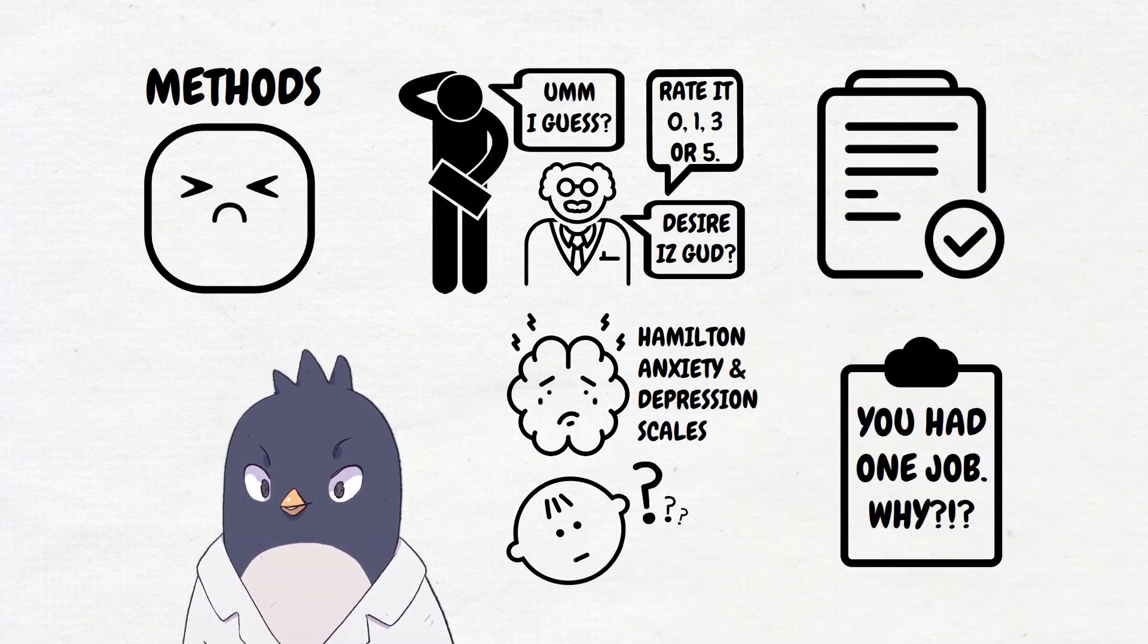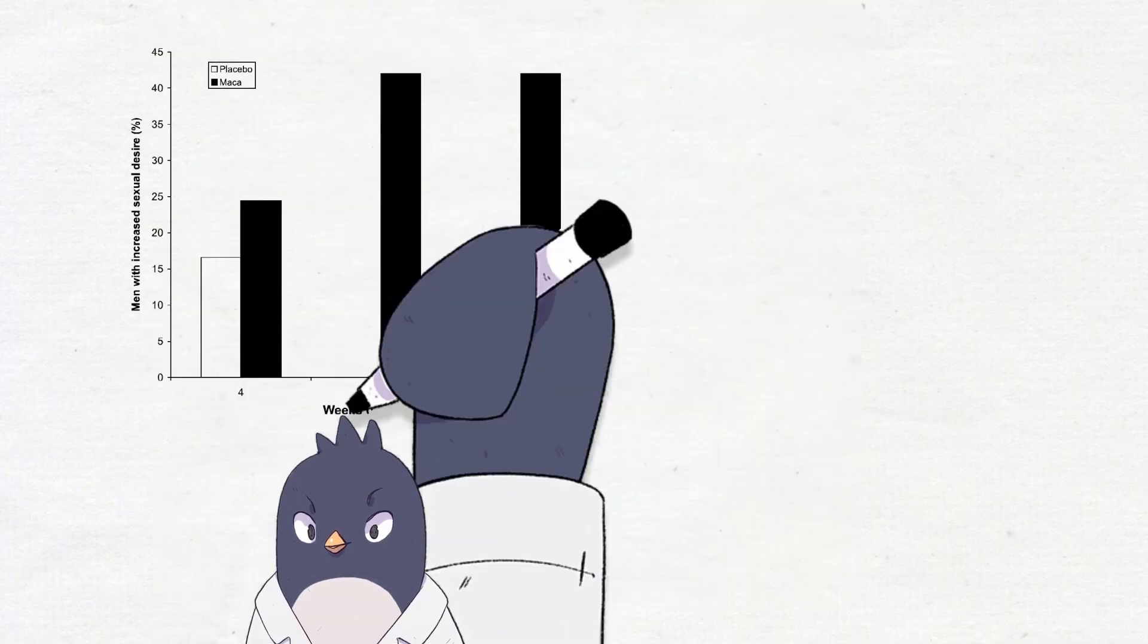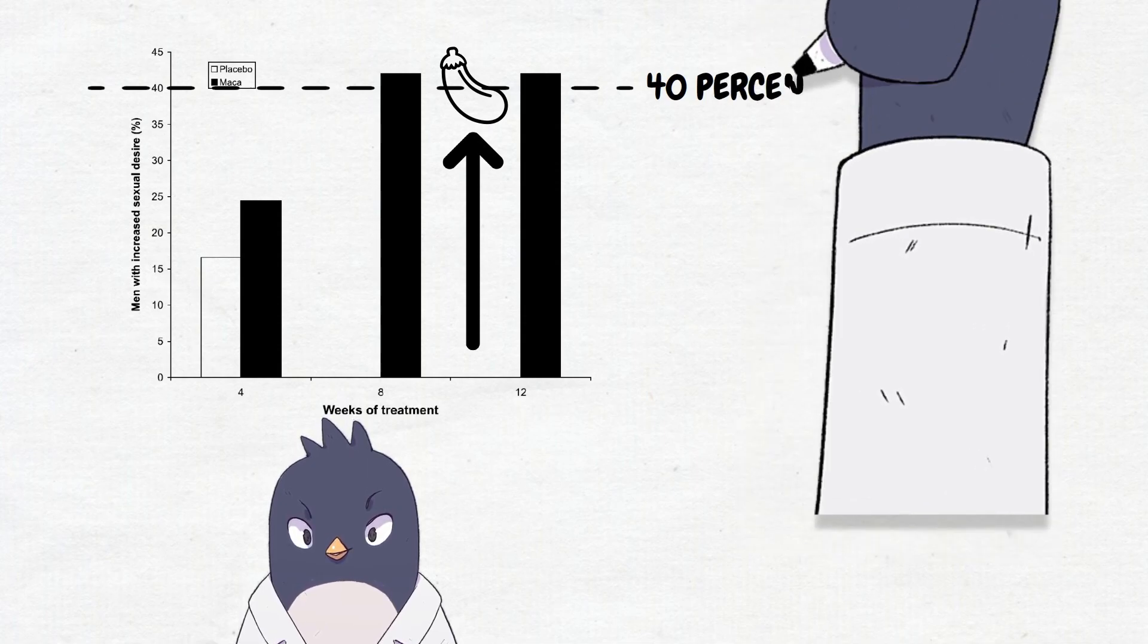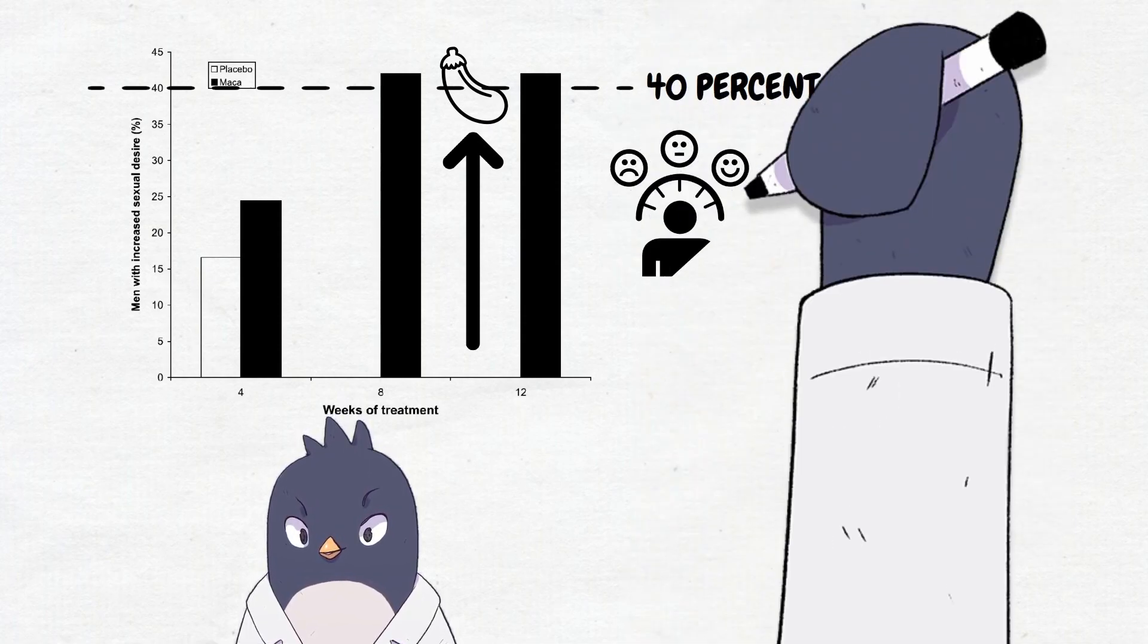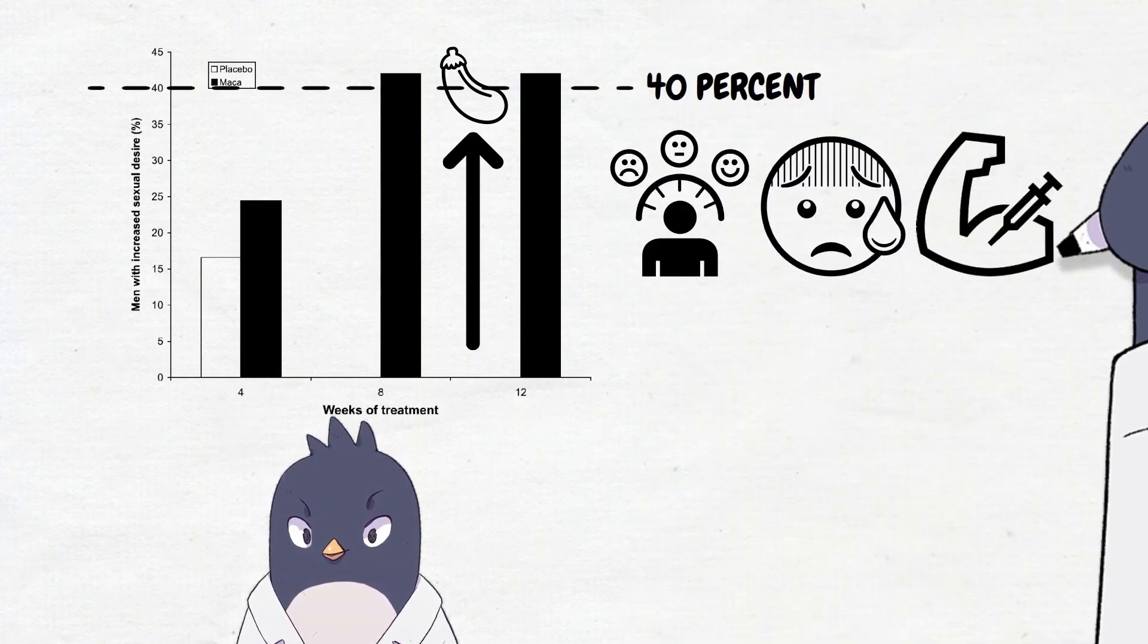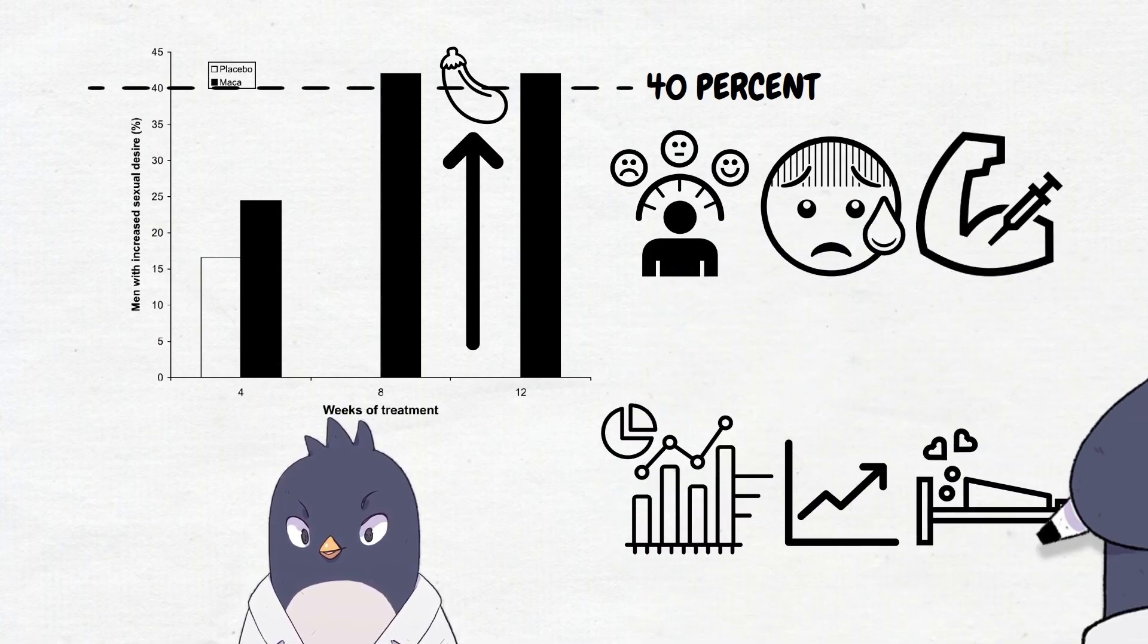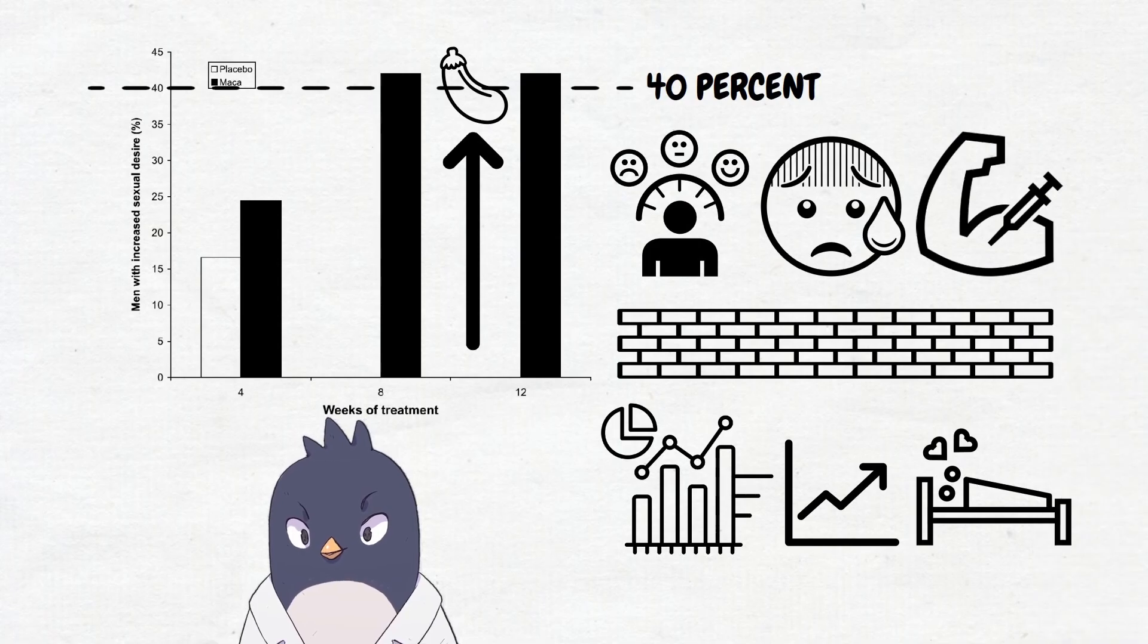Anyway, what did they find? After 8 and 12 weeks there was a significant increase in sexual desire for the men taking maca, with about 40% of them feeling an improvement. They don't really comment on changes in mood, anxiety, or testosterone levels, but with some statistical gymnastics concluded that the improvement in sexual desire was independent of any change in those other things.